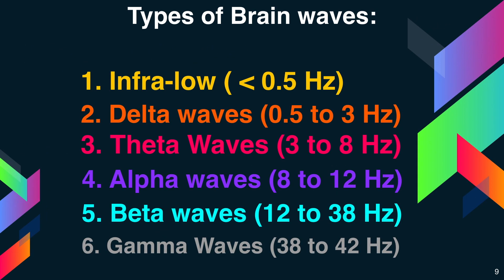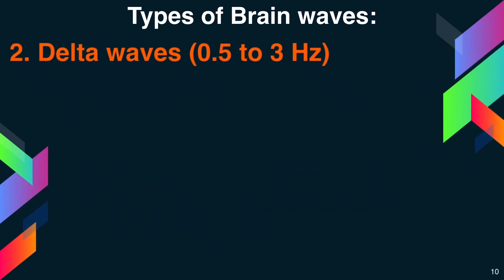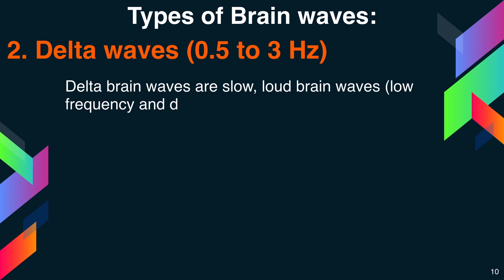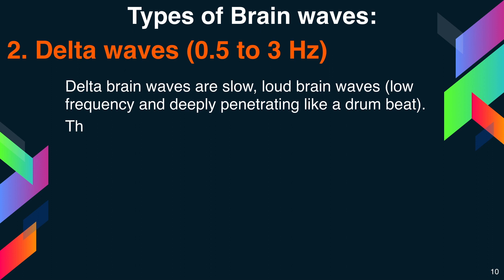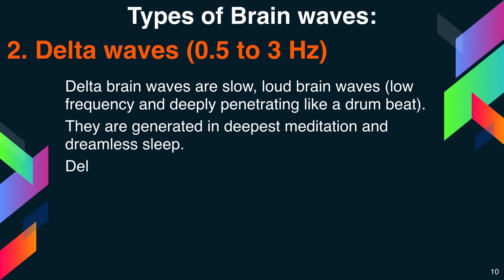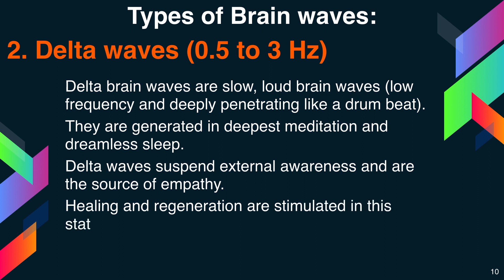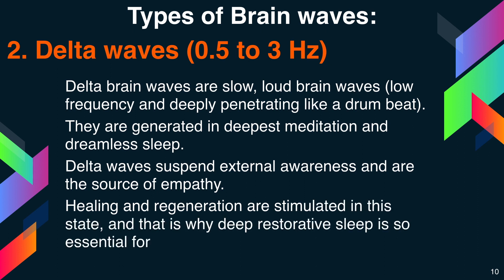The second type is delta waves, between 0.5 to 3 hertz. Delta brain waves are slow, loud brain waves — low frequency and deeply penetrating like a drum beat. They are generated in deepest meditation and dreamless sleep. Delta waves suspend external awareness and are the source of empathy. Healing and regeneration are stimulated in this state, and that is why deep restorative sleep is essential for the healing process.